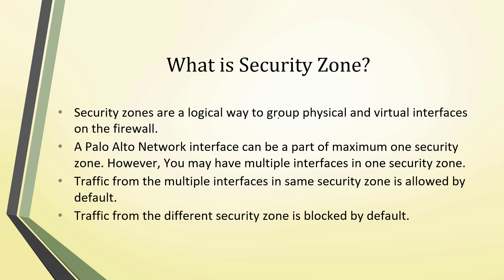Security zones are a logical way to group physical and virtual interfaces on the firewall. Here I have an ISP connection, a DMZ zone with multiple servers, and two more interfaces for my LAN users. Security zones are a logical way to segregate your interfaces — this interface belongs to ISP, this one to DMZ, and these two to LAN. This is a security zone.